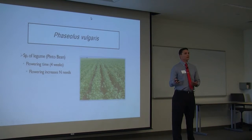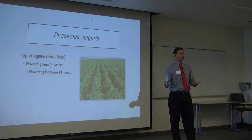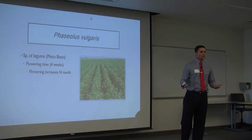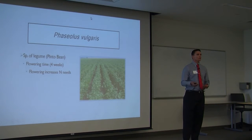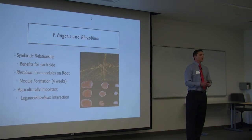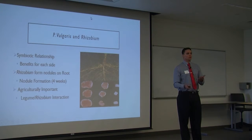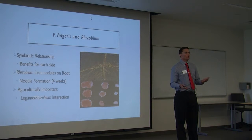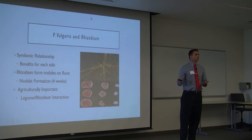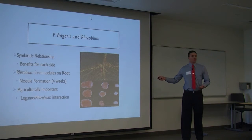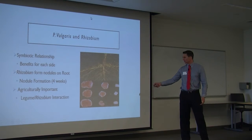Fasciolis vulgaris is a type of legume plant that forms this association with the rhizobium bacteria. It is more commonly known as the pinto bean, and the flowering time for these plants is four weeks. As flowering occurs, there is an increase in nitrogen need within the plant. P. vulgaris and the rhizobium have a symbiotic relationship in which both benefit. The plant obtains a nitrate source, and the rhizobium obtain a carbon source and a home. These rhizobium are housed within nodules, and within the nodules is where nitrogen fixation is taking place. Here is a picture of the nodules on the roots of a leguminous plant, and here is the cross section of one of these nodules — the red coloring is an indication of nitrogen fixation.